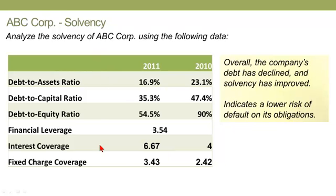Here is a summary of the solvency ratios we've reviewed. These are all solvency ratios: the first four were debt ratios focused on the balance sheet, and the last two are coverage ratios which involve the income statement. This is David of Monarch Turtle. Thanks for your time.